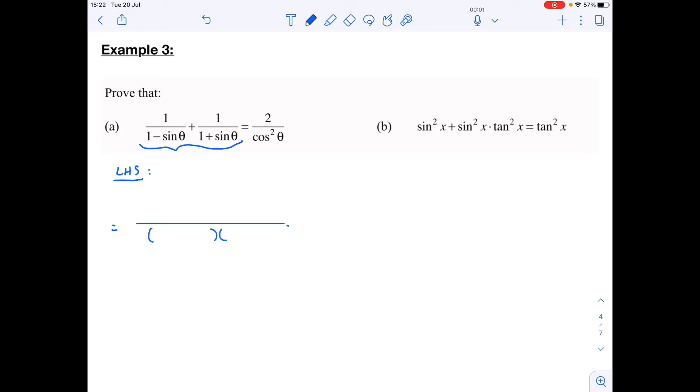What's my common denominator here? Exactly. 1 minus sin theta, 1 plus sin theta. So let's work out what goes on top. This is already 1 minus sin theta, so it's going to be 1 times 1 plus sin theta plus, 1 plus sin theta leaves me with 1 minus sin theta times 1.